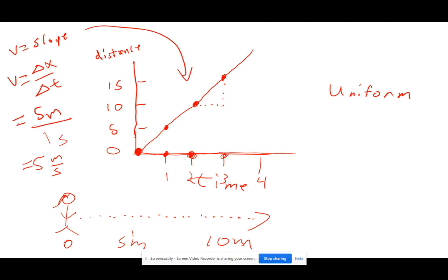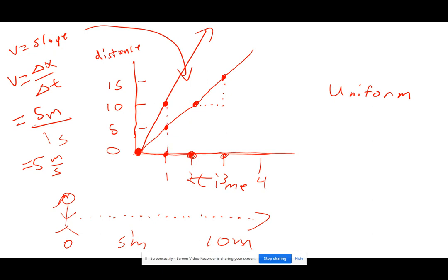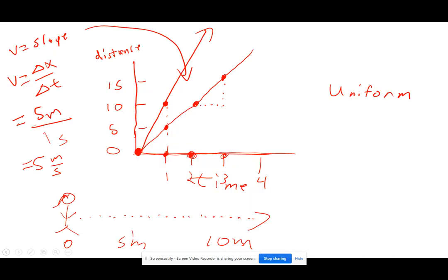What that means is the steeper the slope, the faster the velocity. Notice that in this graph, at 1 second, this particular person has already traveled 10 meters. At 2 seconds, 15 meters. So this person is traveling faster.